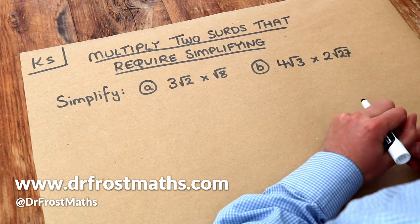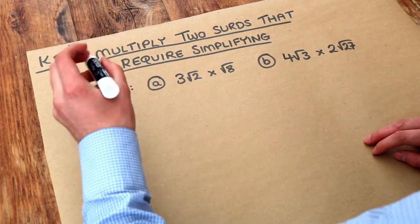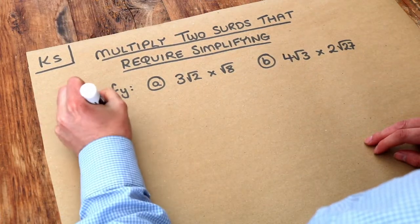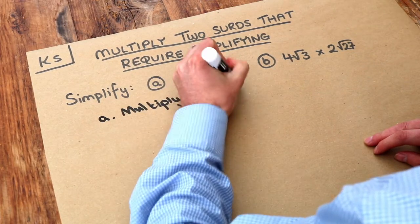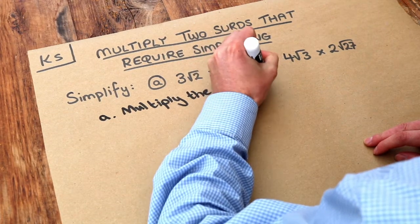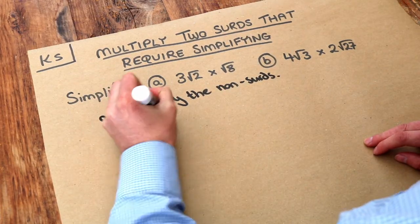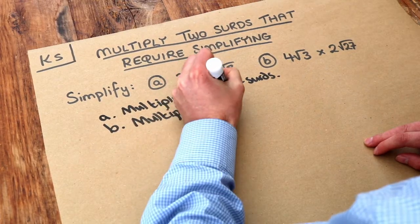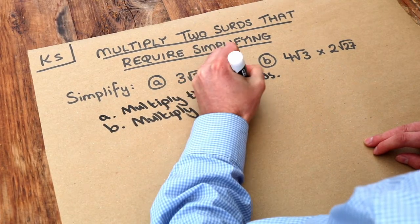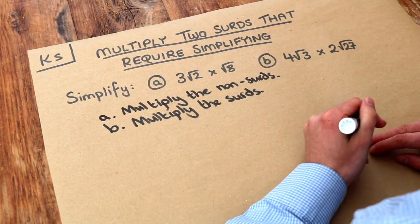Now in a previous video we saw how to multiply two surds in general and we had this principle. We firstly multiply the non-surds, and by non-surds I just mean the numbers that don't have a square root over them, and then secondly you multiply the surds. We do exactly the same thing here, it's just that once we've done that we're then going to have to simplify it, and we've seen how to simplify surds before.